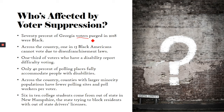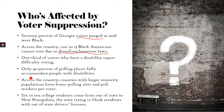We'll talk about voter purges in a minute, but 70% of Georgia's voters purged from their records in 2018 were Black. Across the country, 1 in 13 Black Americans cannot vote due to disenfranchisement laws. One-third of voters with a disability report difficulty voting, which is a huge number. However, only 40% of polling places fully accommodate people with disabilities — including hearing, sight, and physical disabilities — meaning 60% of polling places make it harder to vote if you have a disability.